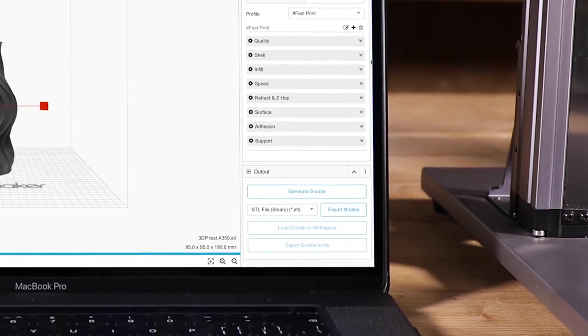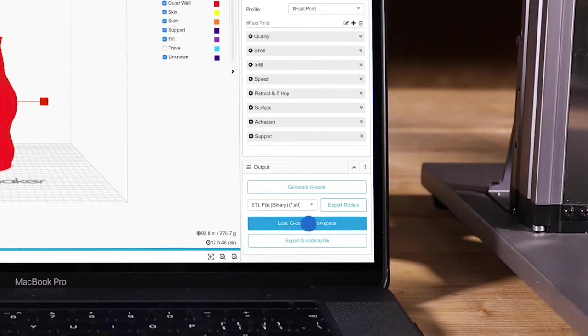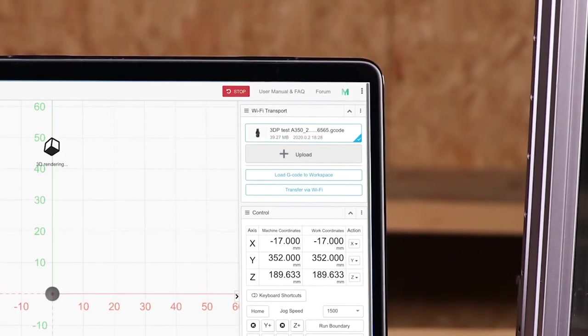When the setting is done, click Generate G-code and choose Load G-code to Workspace. Now, send the G-code file to your machine via Wi-Fi. Tap Yes on the touch screen to enter the preview page.